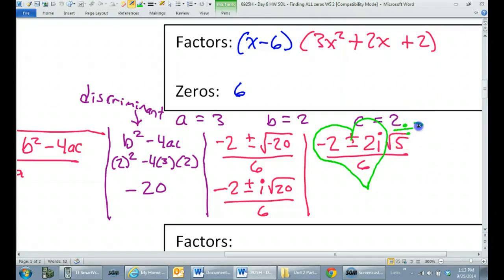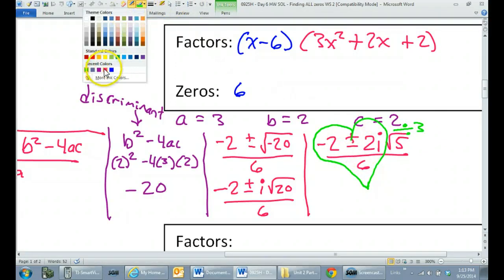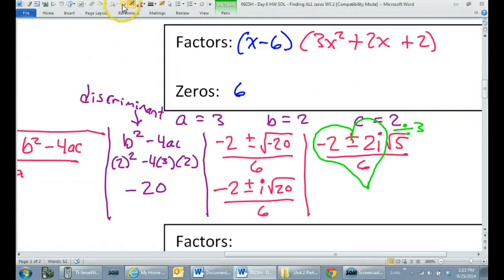Now, if there is a GCF and you divide all 3, what will we get? If I divide everything by 2, what will I get? Well, 2 divided by 2 is 1. So, I'm going to get negative 1 plus or minus. Again, 2 divided by 2 is 1. But, in this case, I don't need to write the 1. So I'll just have i radical 5. And then, 6 divided by 2 is 3. That's it. That's as far as we can go with this thing.